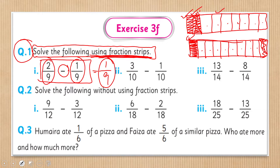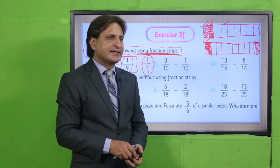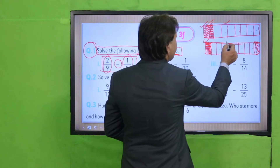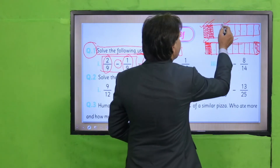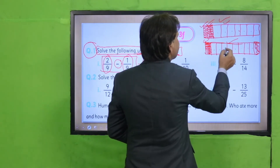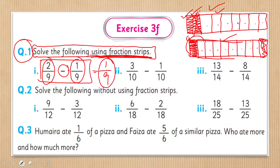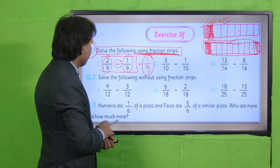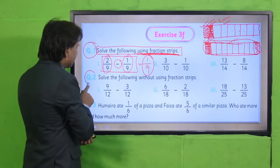इसी तरह आपने strips बनानी हैं हर part में और इनको subtract करना है। 1/9 में से 2/9 subtract करते वक्त — upper strip में से shaded part cross कर दें — तो अगेन result 1/9 बचेगा। Similarly part 2 और part 3 आपने खुद solve करने हैं।